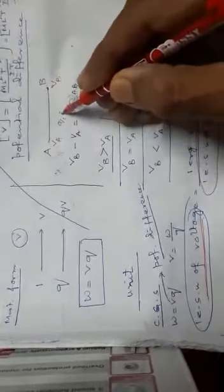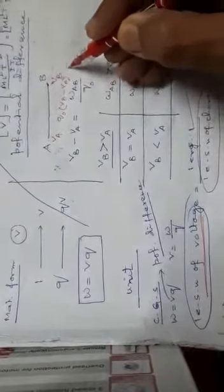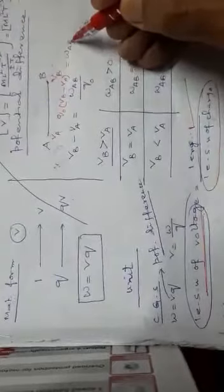The work done from A to B, W_AB, is equal to Q0 into (VB minus VA). So, VB minus VA is equal to W_AB divided by Q0. If VB is greater than VA, then W_AB is greater than 0 — positive work is done.